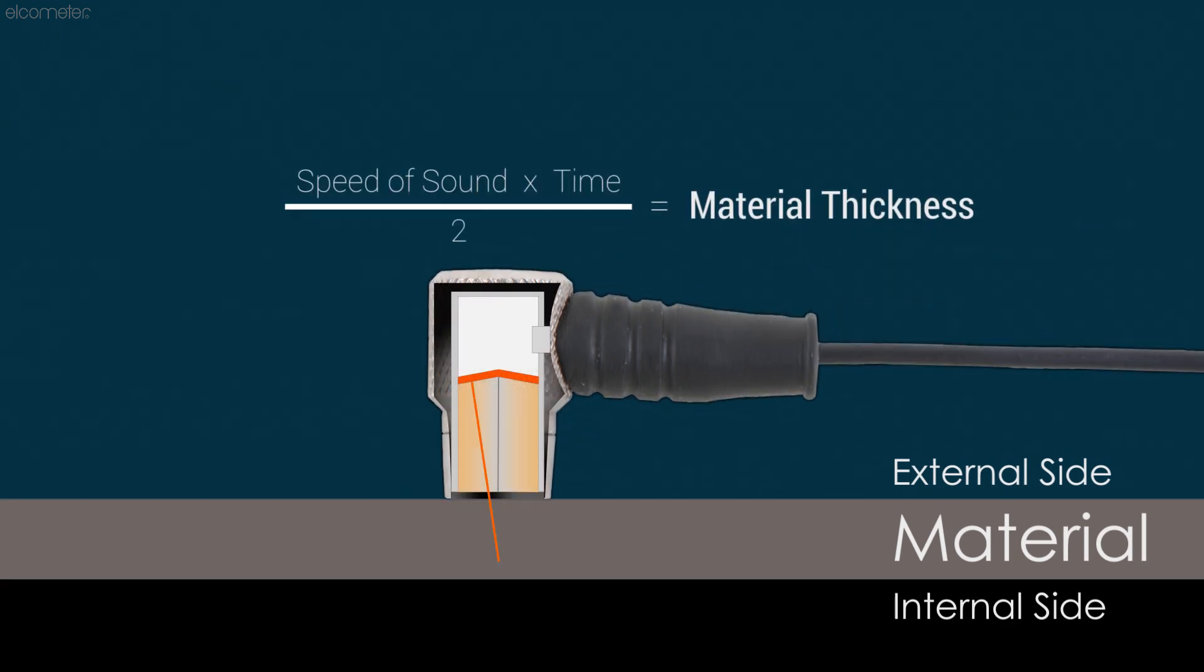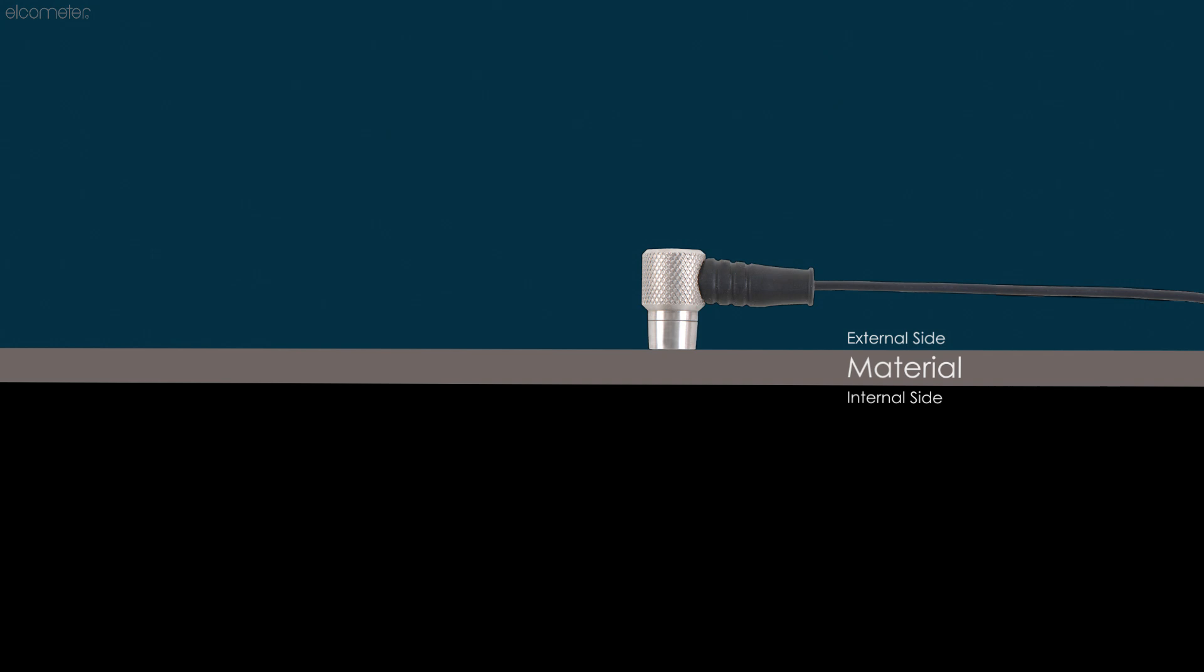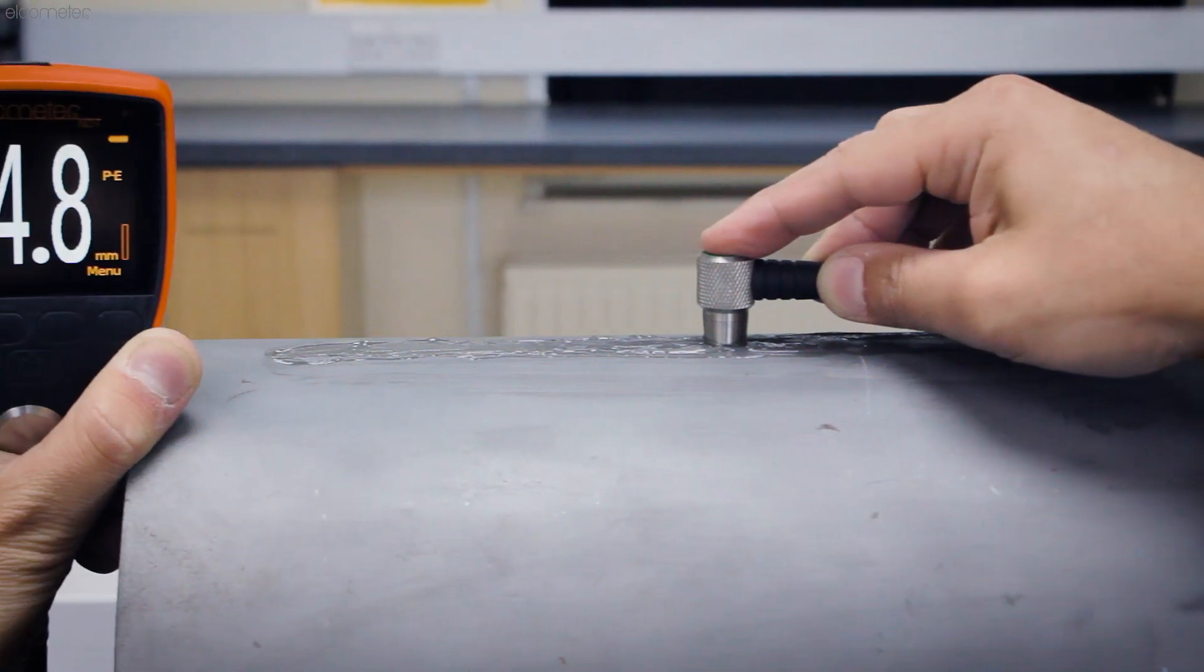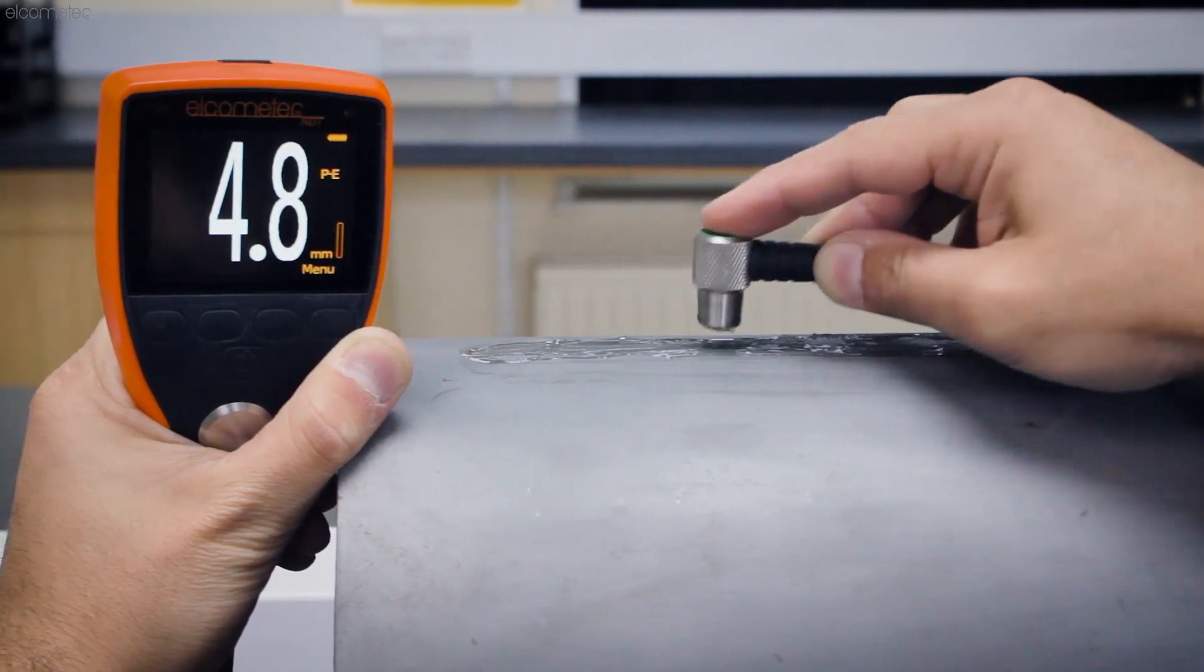Using an ultrasonic pulse to determine the thickness of the material, the Elcometer MTG2 provides instant and reliable steel thickness measurements from just one side of uncoated steel substrate.